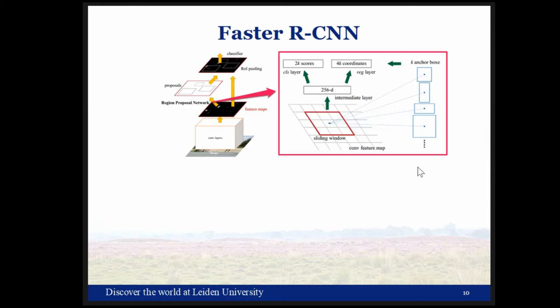Faster RCNN is one of the latest RCNN implementations. It is built on a normal CNN backbone — in this case ResNet-50 or VGG-16 — where one of the feature layers is fed into a Region Proposal Network (RPN). The RPN uses a sliding window with predefined anchor points and anchor boxes. These regions of interest (ROIs) are fed together with the feature map into a classifier, then pooled and individually classified.